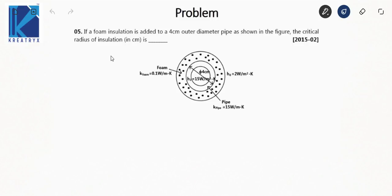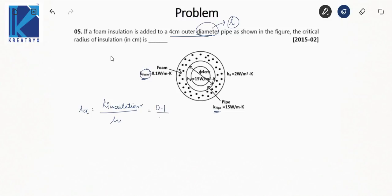This is again a similar question based on critical radius of insulation. A foam insulation is added to a 4 cm outer diameter pipe — note this is diameter, so convert to radius. The pipe's thermal conductivity and foam's thermal conductivity are both given, but r_critical = k_insulation/h uses k of the foam (insulation), not the pipe. So r_critical = 0.1/15 = 0.05 m = 5 cm.